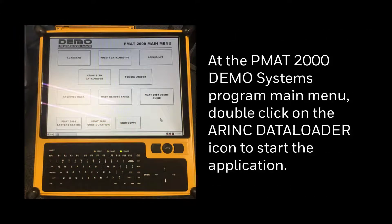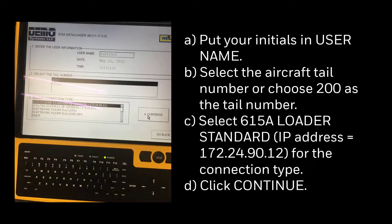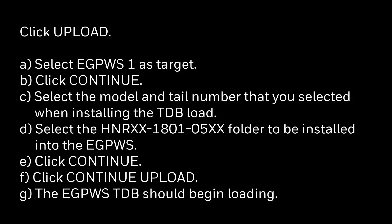At the PMAT-2000 demo system's program main menu, double-click on the ARINC 615A data loader icon to start the application. Put your initials in the username field. Select the aircraft tail number or choose 200 as the tail number. Select 615A loader standard IP address for the connection type and click Continue. Click Upload and select EGPWS1 as the target. Click Continue, then select the model and tail number that you selected when installing the TDB load. Select the HNR folder to be installed into the EGPWS and click Continue.